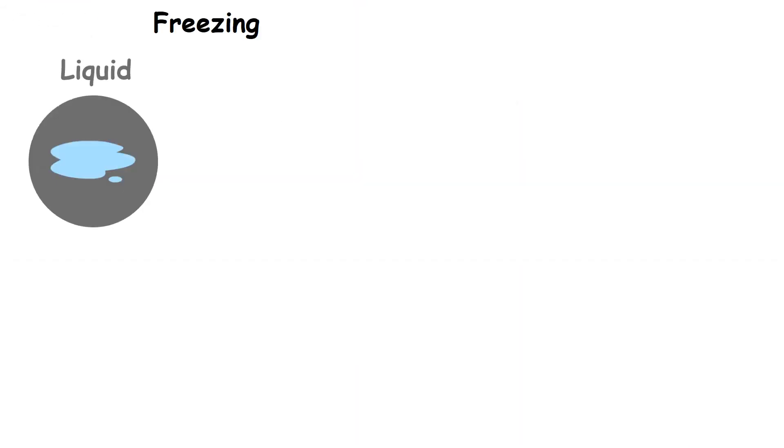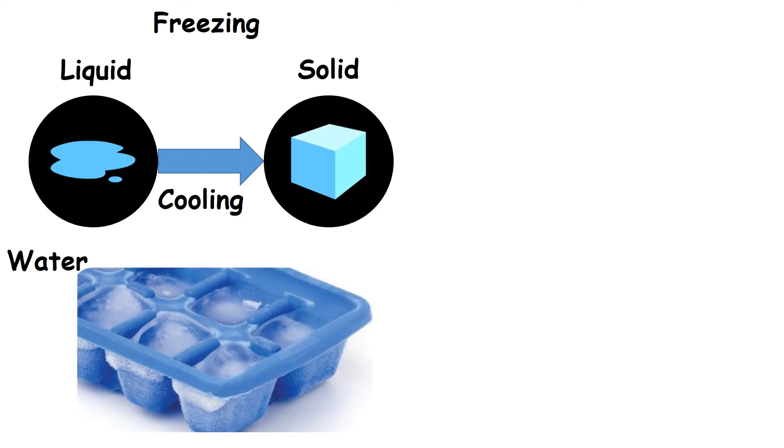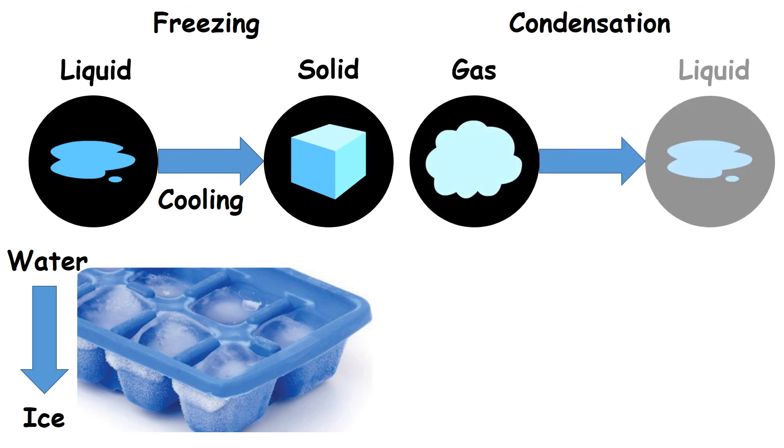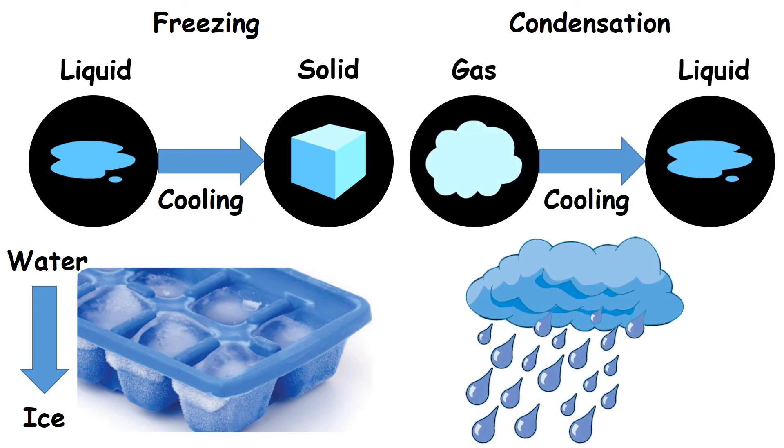Freezing. Change of liquid into solid on cooling is known as freezing. For example, water gets cooled and becomes ice when placed in the freezer. Condensation. Change of gas into liquid on cooling is called condensation. For example, on cooling, clouds condense and fall as rain.